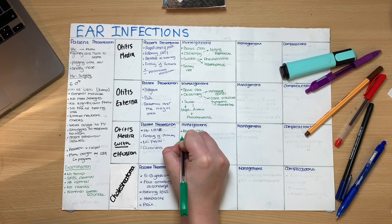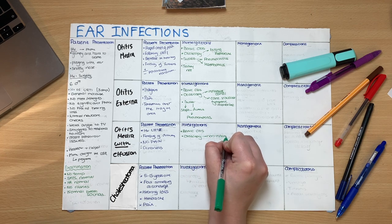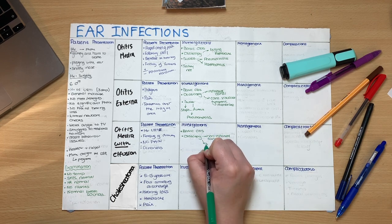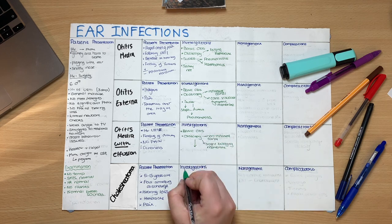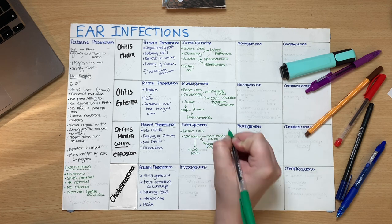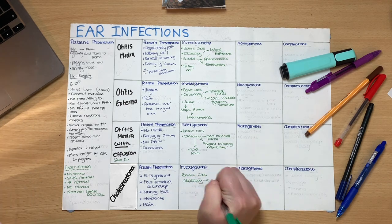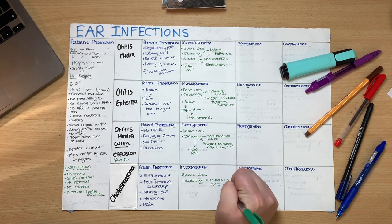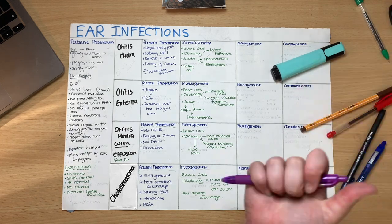With otitis media with effusion, again you would do your basic observations followed by otoscopy. It's important to visualise a non-inflamed canal, and you may see a slight bulging tympanic membrane. The most important diagnostic factor is that there will be a fluid level behind the eardrum, indicating that there is exudate that cannot escape the middle ear. Finally, for a cholesteatoma, your otoscopy will show a mass in the attic of the eardrum — this may be quite prominent or sometimes hard to see depending on the size. These patients can also have a CT scan to better image the mass.